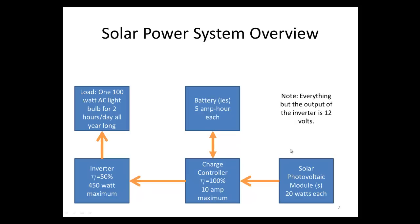Everything but the output of the inverter is 12 volts DC. From the solar module to the charge controller is 12 volts, from the charge controller to the battery is 12 volts, and from the charge controller to the inverter is 12 volts — all DC. Then the inverter outputs 120 volts AC, just like what you use in your home. That's the overview of the system.